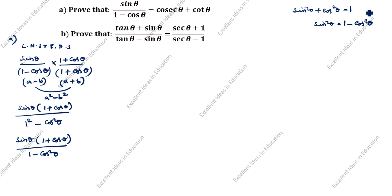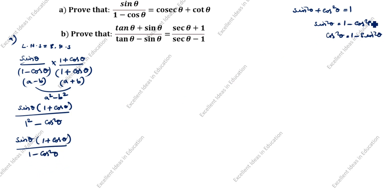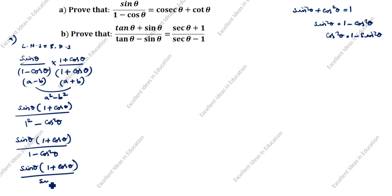Bring cos squared theta to this side: cos squared theta equals 1 minus sin squared theta. So what is 1 minus cos squared theta? It means sin squared theta. So we now have sin theta times open bracket 1 plus cos theta, divided by sin squared theta.